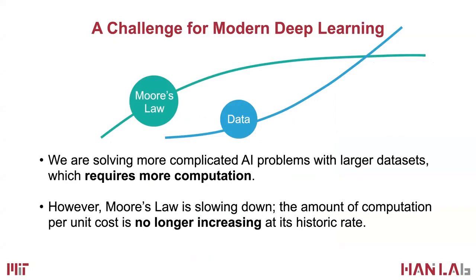We are solving more complicated AI problems with larger datasets, especially for video, which requires more computation. Typically we use better hardware, but nowadays Moore's Law is slowing down — the amount of computation per unit cost is no longer increasing at its historic rate. Data is increasing faster than hardware advances, so we need efficient algorithms to handle such large amounts of data.